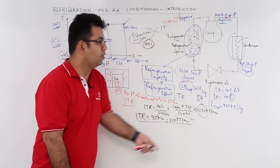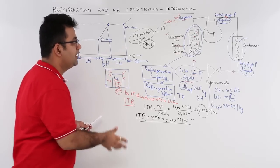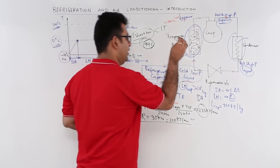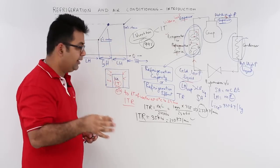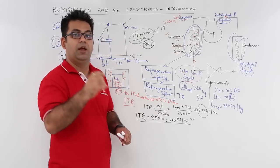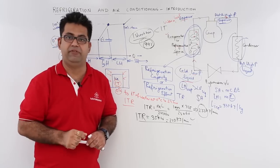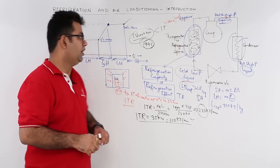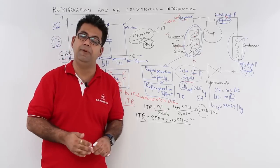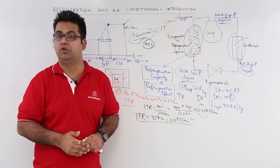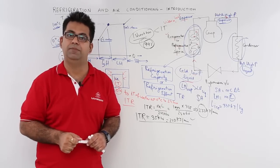I hope you got a very good idea about what this subject is all about — the main components, the specific heat, latent heat, and the definition of the units of refrigeration, that is ton of refrigeration. After having an introduction to the subject of RAC, let's move on to the next video and talk about the reversed Carnot cycle.